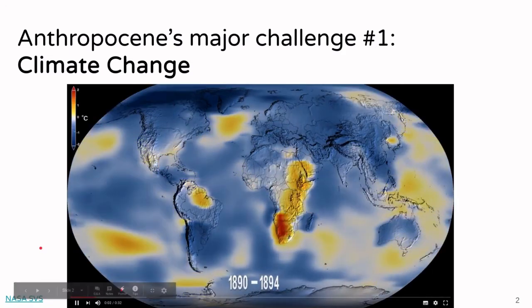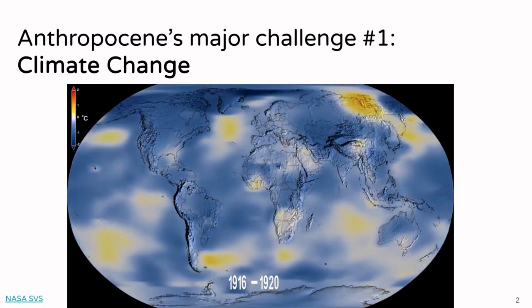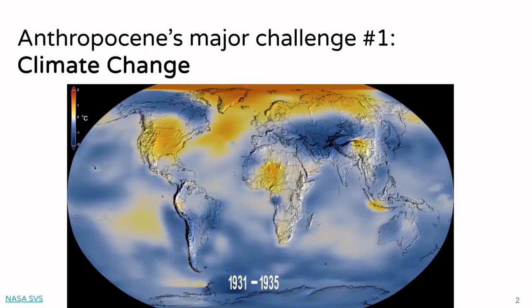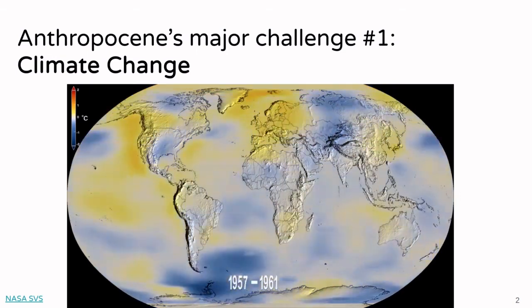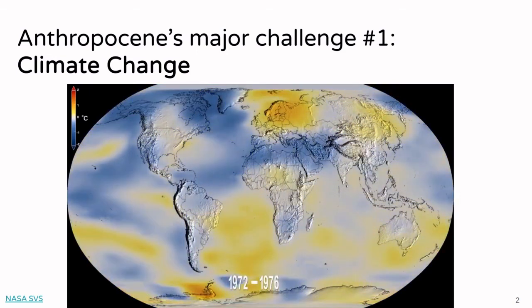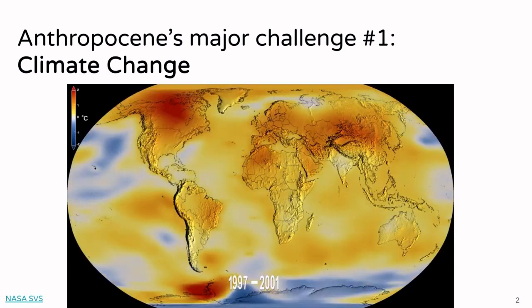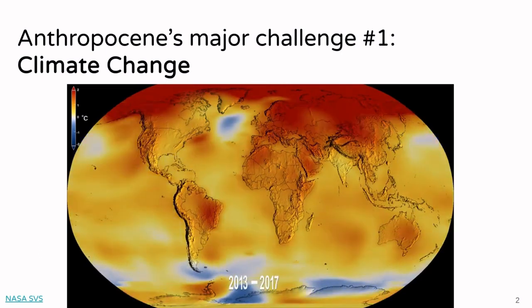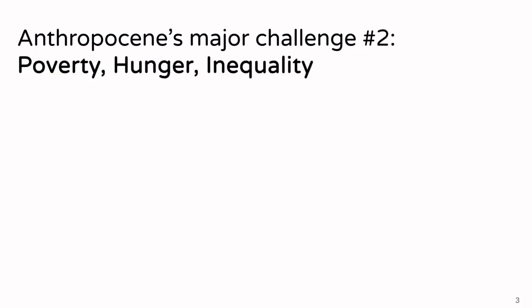We see that there are currently two major challenges in our world. On one side, climate change — what you see here is average temperature over four years compared to a baseline from the year 1950, and how the temperature increased at different regions of the world. Showing all data up to 2019, we see a massive increase in temperatures, especially in regions in the north that have never experienced such high temperatures.